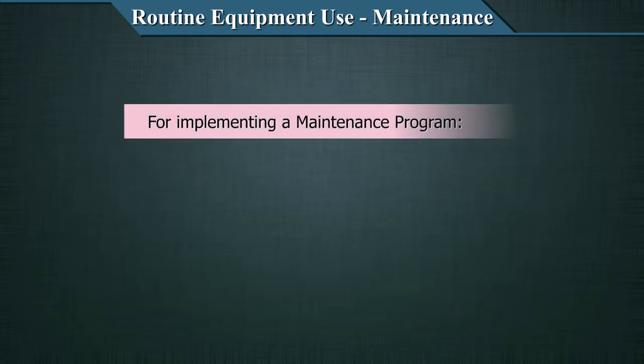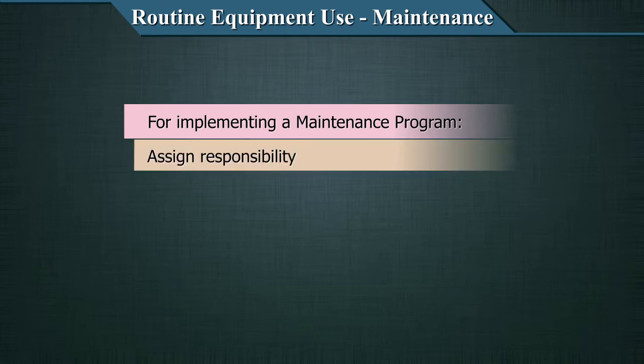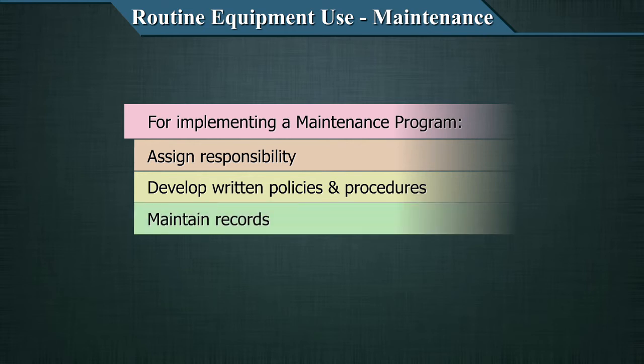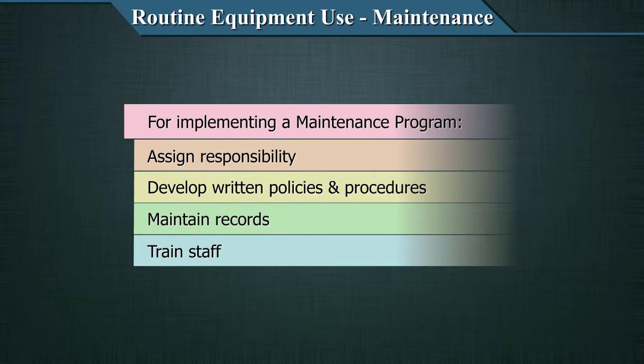Now that you have a plan for maintenance, you have to implement it. Not making the plan alone is not enough — the implementation should be done. Establishing a plan is the first part, and implementing it is the next key step for maintenance qualification. For implementation, you have to assign responsibilities, develop written policies and procedures, maintain records, and train staff. All of these are very key aspects of implementing your maintenance plan.